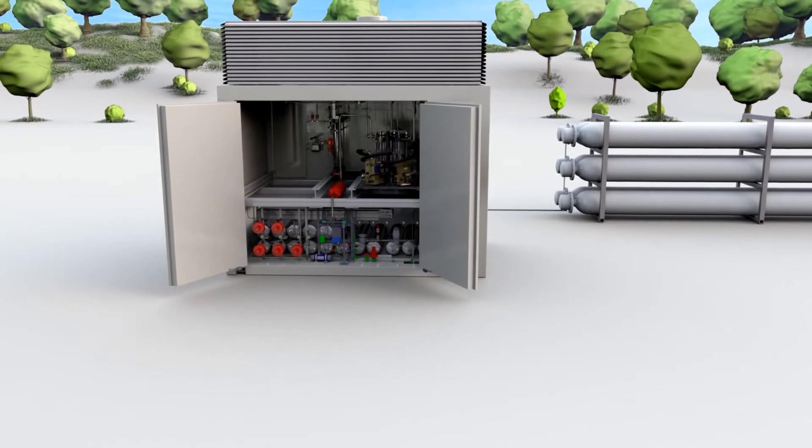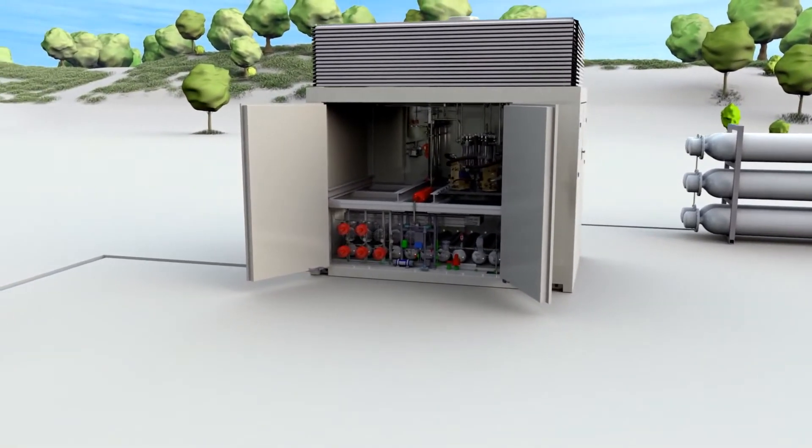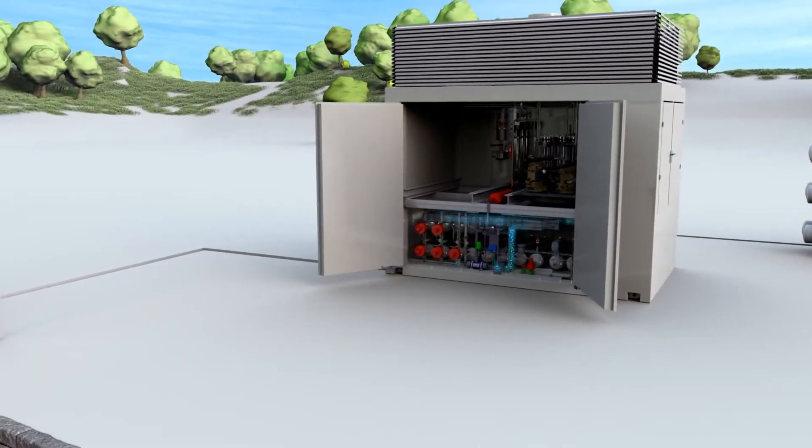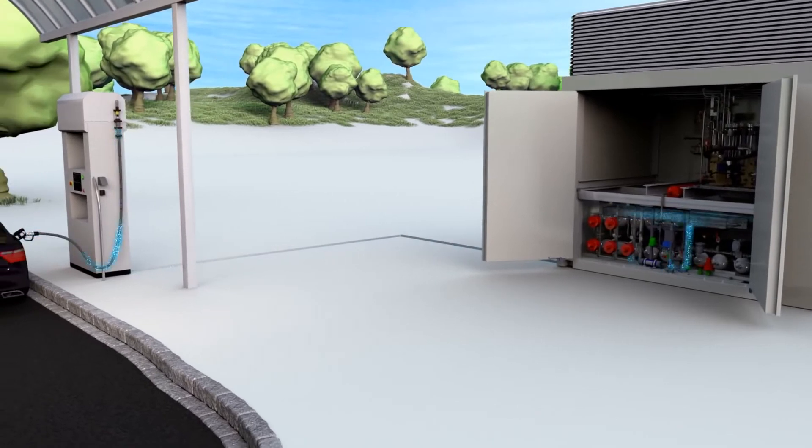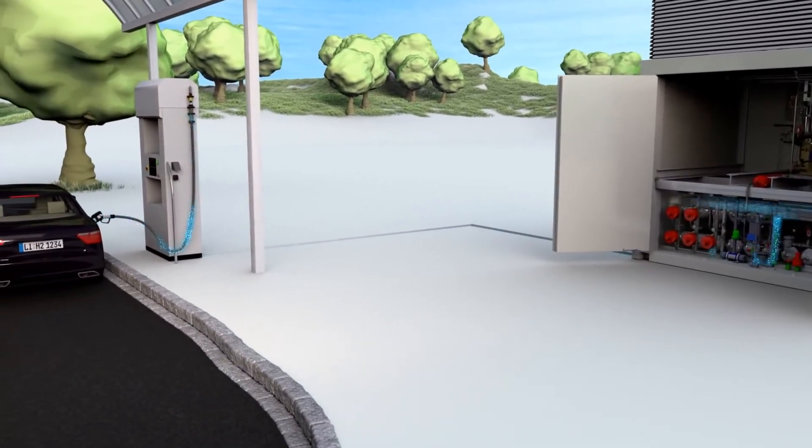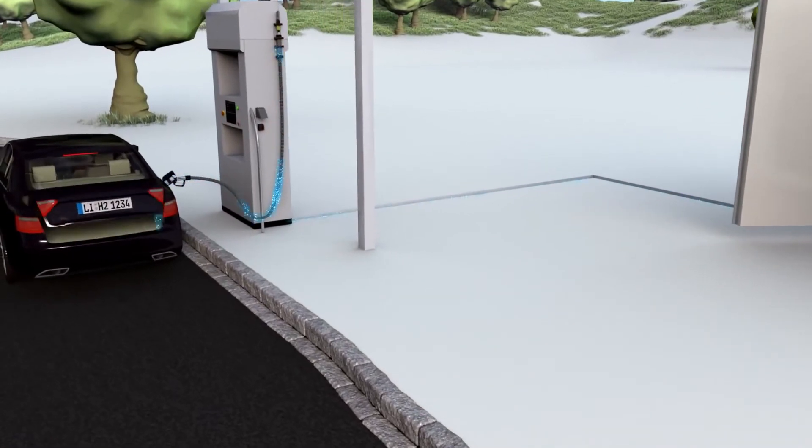After a successful pressure pulse, with which pressure tightness and fueling parameters are checked, the actual refueling process begins. The hydrogen now flows through the dispenser lines towards the dispenser. Safety-relevant parameters are constantly monitored before and during the refueling process.